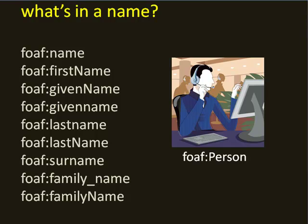When we talk about a FOAF person and describe somebody as a FOAF person, we want to give their name. If you look at the FOAF spec, there are quite a few ways we can refer to somebody's name — sort of an alphabet soup of naming. We've got 'name', which can be the complete name of the person, but we can also break it down into first name, given name, last name, another last name property, a surname, a family name, or a family name.